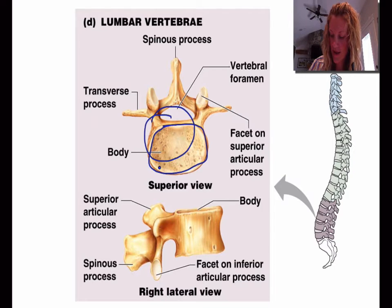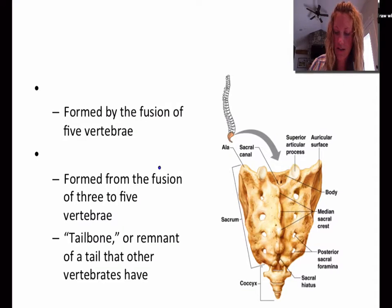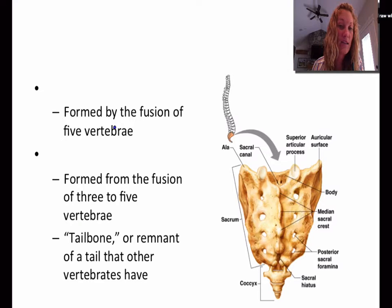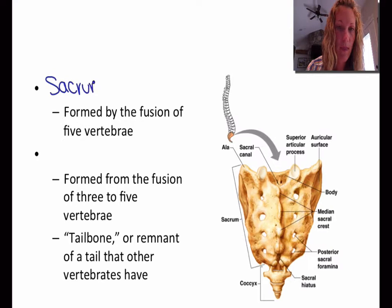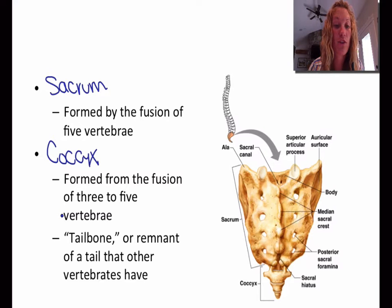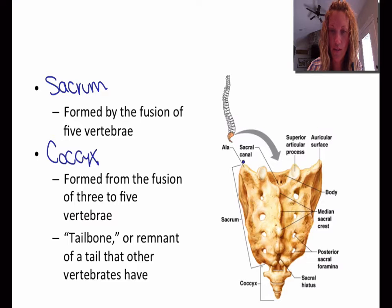Now we're getting into our last little section — the coccyx and the sacrum. The sacrum is formed by the fusion of five vertebrae. The coccyx is formed from the fusion of the third to the fifth vertebrae, also known as the tailbone or the remnant of that tailbone.